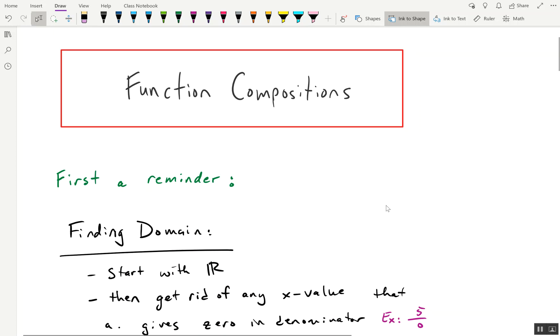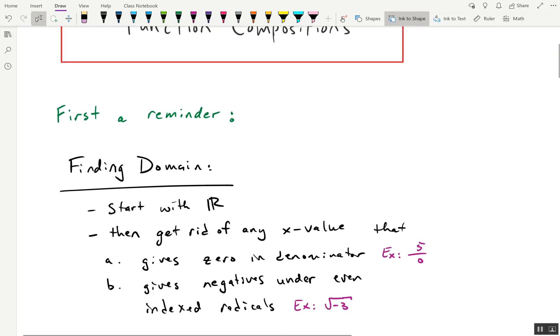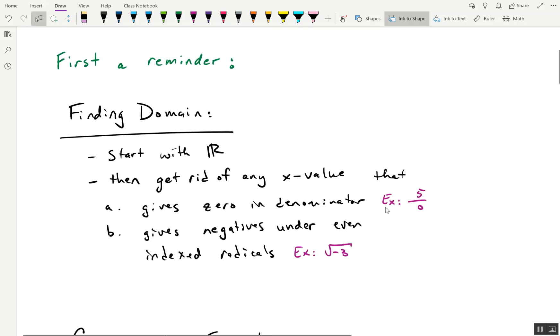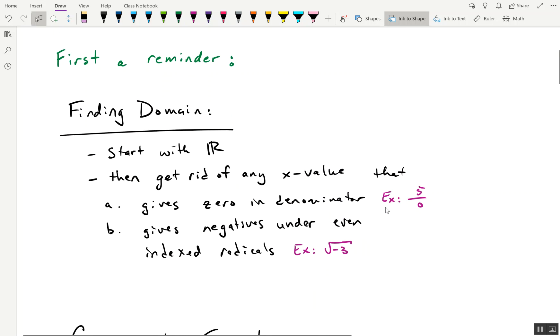Before we start, let's talk about a brief reminder. Domain. When we're finding domain of a function in general, we start as a default with all real numbers. So we assume the domain of the function in question is all real numbers, and then we have to look for two specific areas that give us problems. The first area is we've got to kick out any number that will give us a zero in the denominator. That is no bueno.